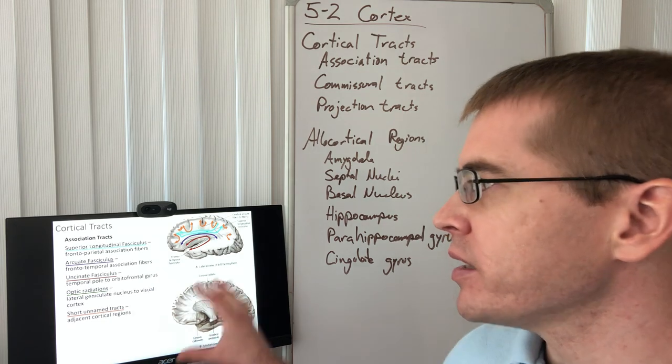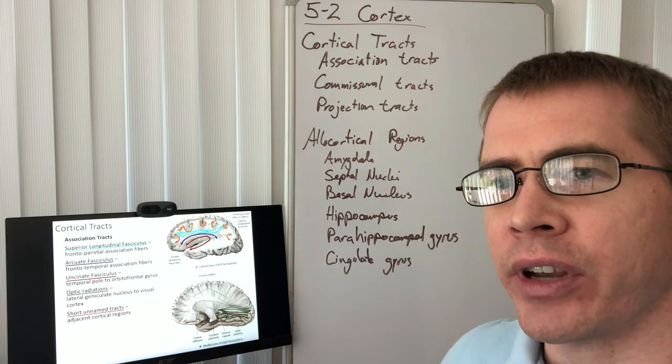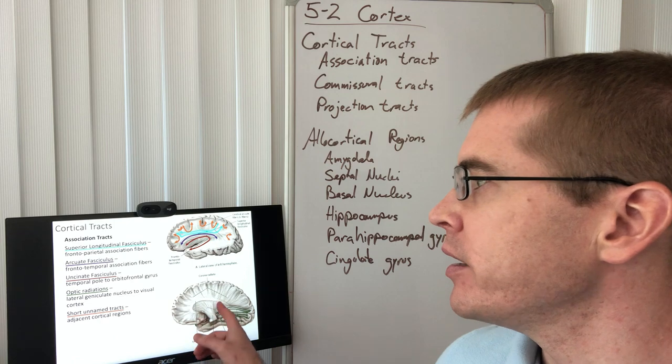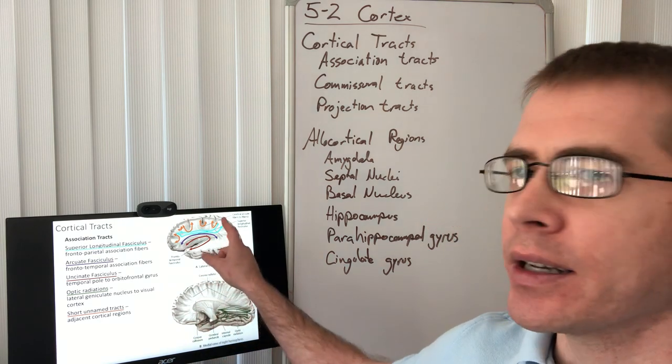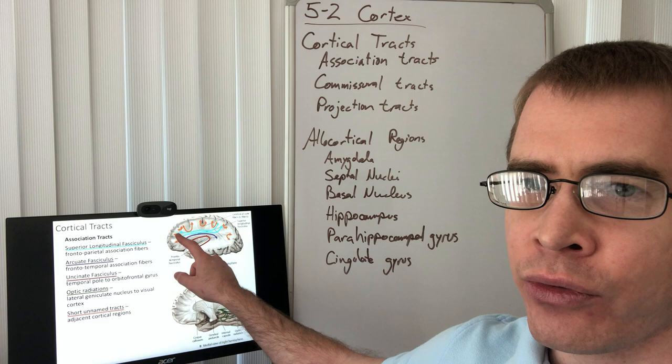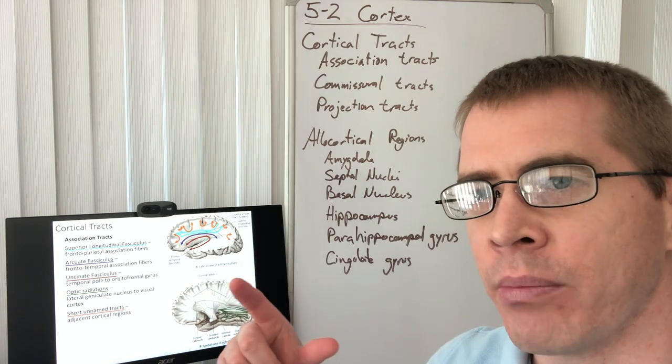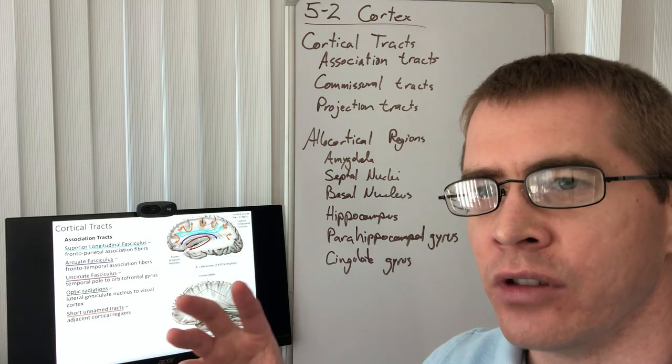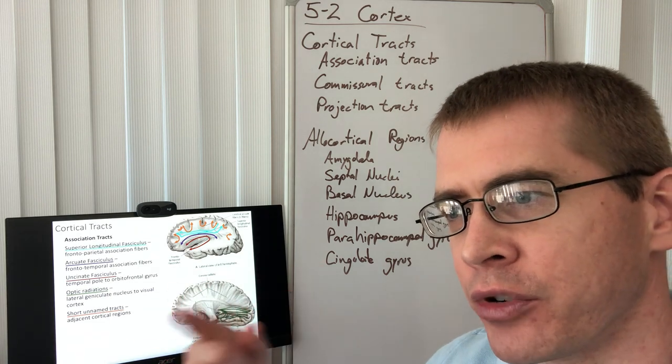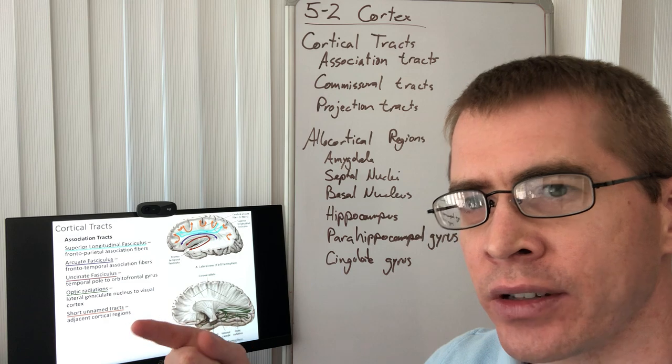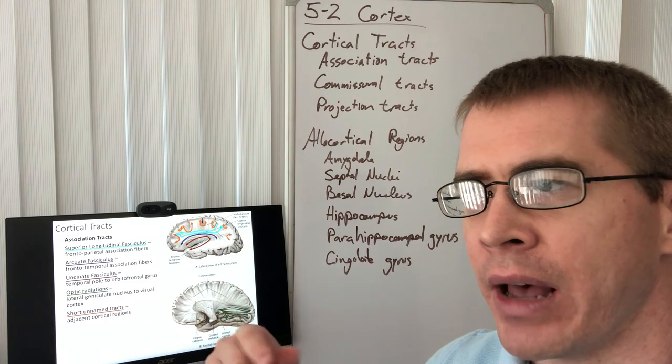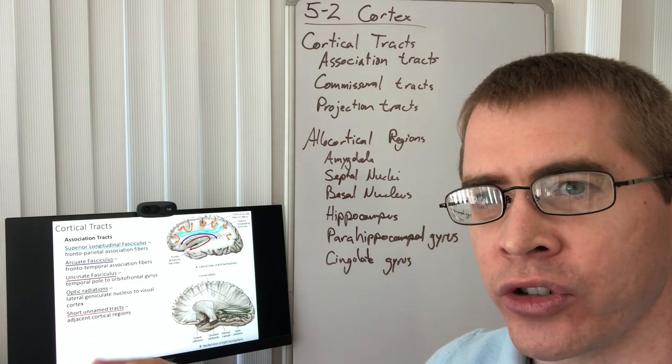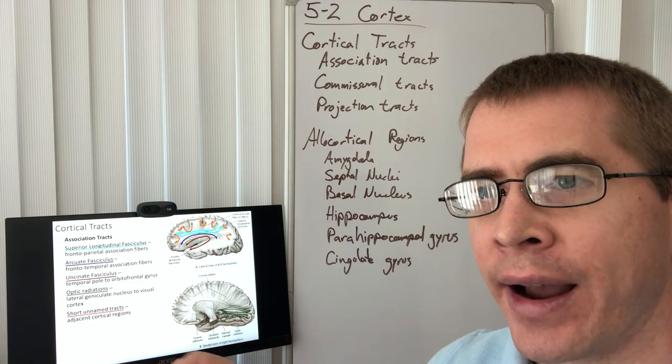So here on this slide I'm showing you some of these specific named tracts, association tracts, and in particular we have tracts that connect the parietal cortex to the frontal cortex, so that information about things, the location of things in the space relative to your body, can be processed by your frontal cortex, and so you can make decisions about objects that are in your awareness, your spatial awareness, and how to interact with those things.